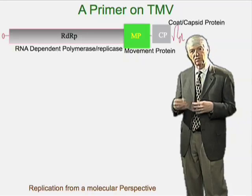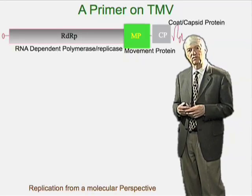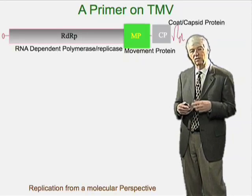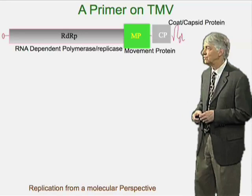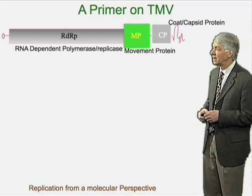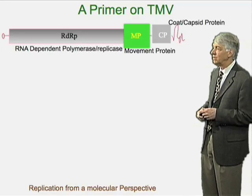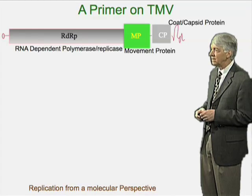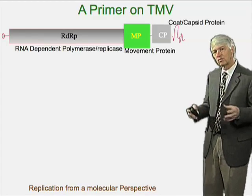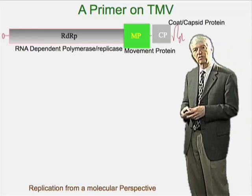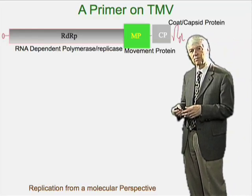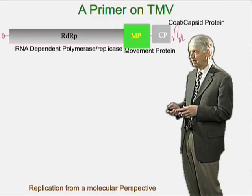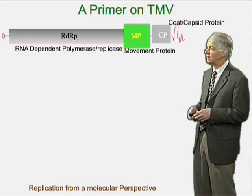The capsid's role is to encapsulate the single-stranded genome and allow it to be transmitted from cell to cell or from leaf to leaf. And of course, that's what's transmitted as workers in the field propagate plants and move the virus around.